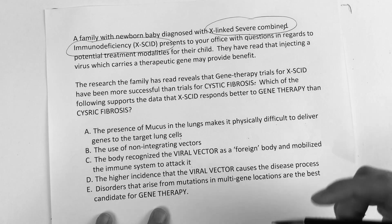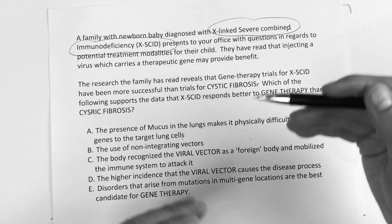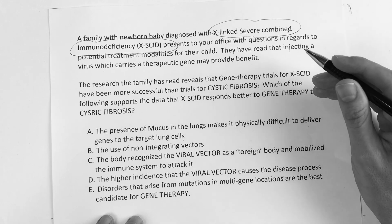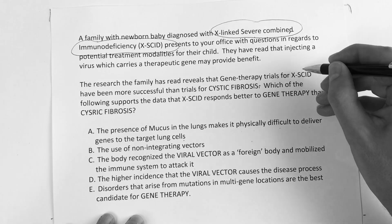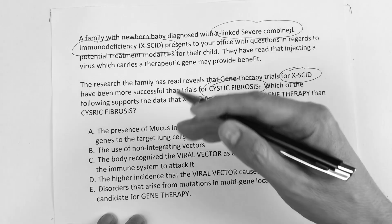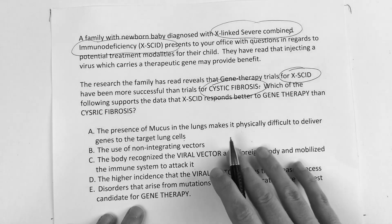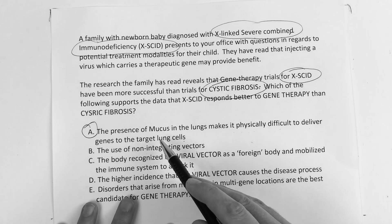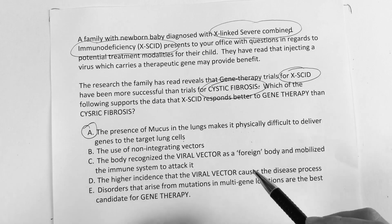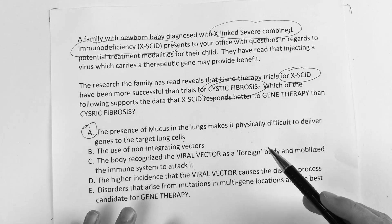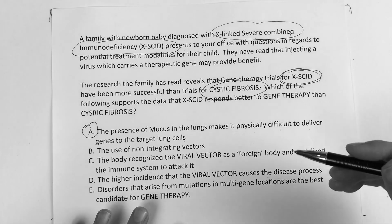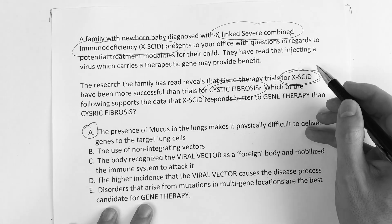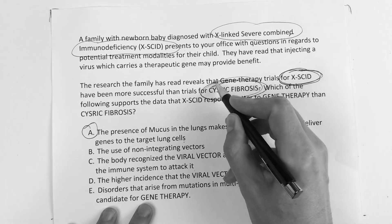Both conditions can use gene therapy, but the take-home point from the research is specificity of comparison. The answer is A — the presence of mucus makes it physically difficult to deliver genes to the target lung cells. With X-linked SCID, the target is on the X chromosome, so it's much easier to pinpoint. That's one key reason for better response in X-SCID versus cystic fibrosis.